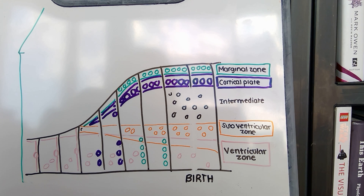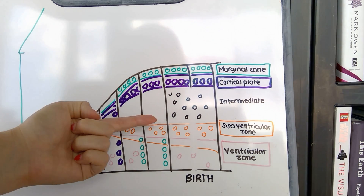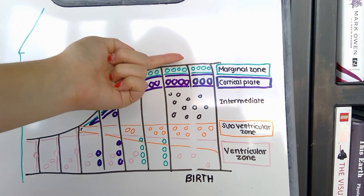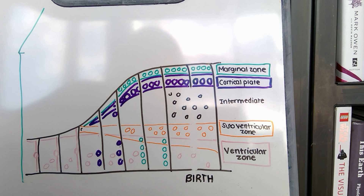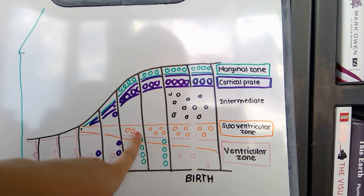Finally, we can see the cortical plate and the marginal zone, which are then filled in by the differentiating neurons as time progresses. This is what gives rise to those six layers of the cerebral cortex. They are entirely determined by the time that the neurons exit mitosis during development.